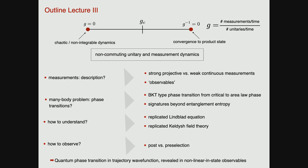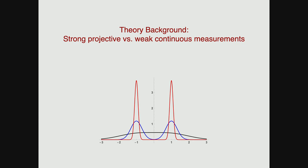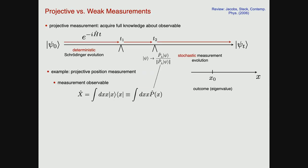In this lecture, I want to briefly introduce an alternative way of thinking about measurements: instead of strong projective measurements, weak continuous measurements. This has the advantage that it lends itself to a path integral formulation of the problem. With a path integral, we always like an infinitesimal time step to be well-defined, and a projective measurement is really a hammer onto the system — so we need to weaken this a bit. I'll give you a little phenomenology and then give you a flavor of this replica description or Keldysh field theory description for this problem.